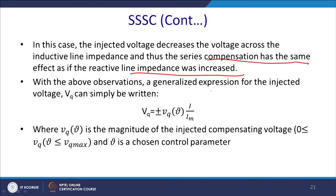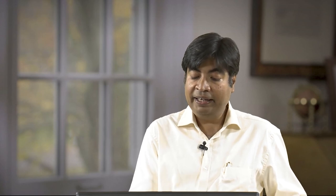A generalized expression for the injected voltage V_c can be written as ±V_c × (I/I_m) unit factor, where V_c is the magnitude of the injecting compensating voltage within the range 0 to +V_c_max, and V is chosen as the control parameter. Considering the sending end voltage V∠delta and the receiving end voltage V∠0, we can rewrite to get an equivalent reactance X_equivalent, and thus the sending end power.